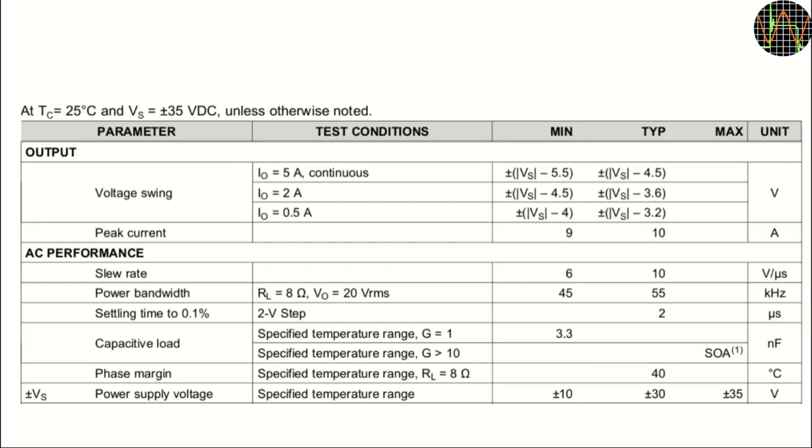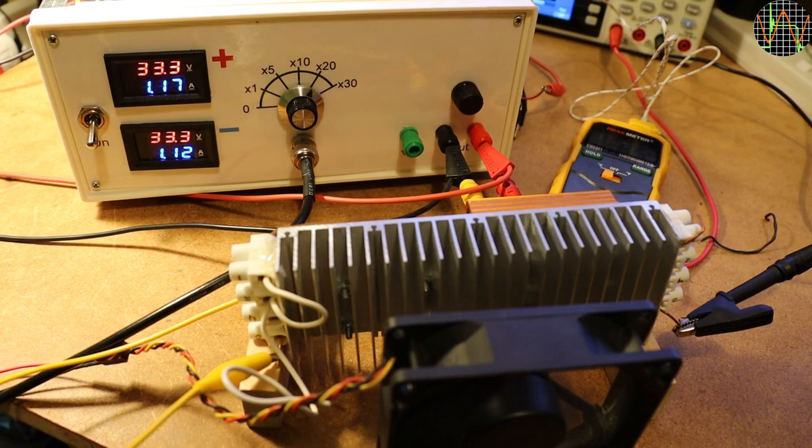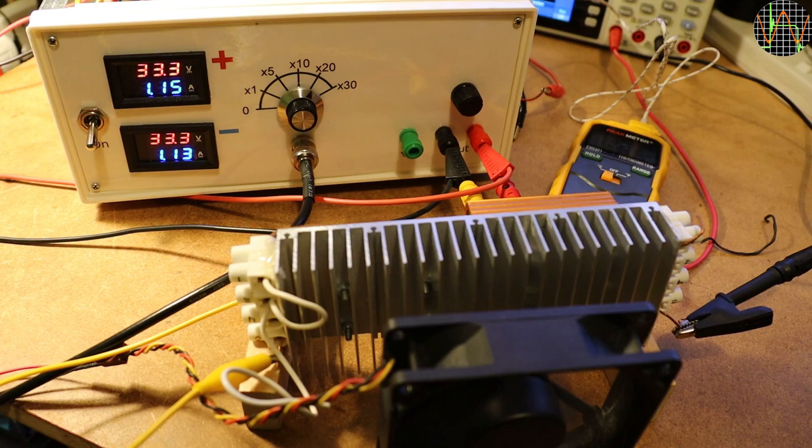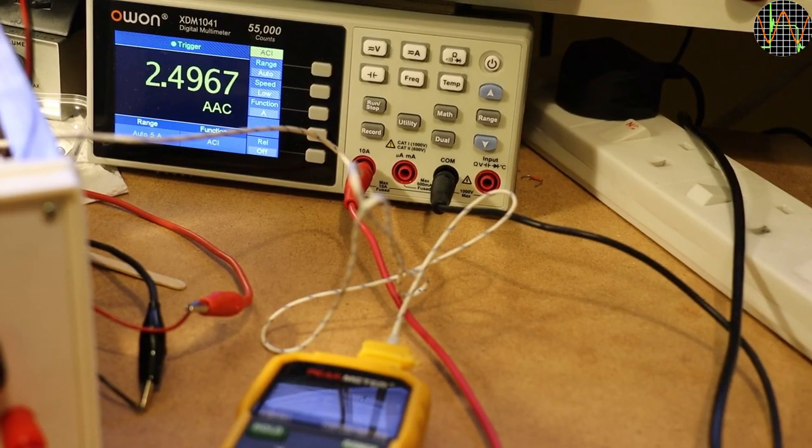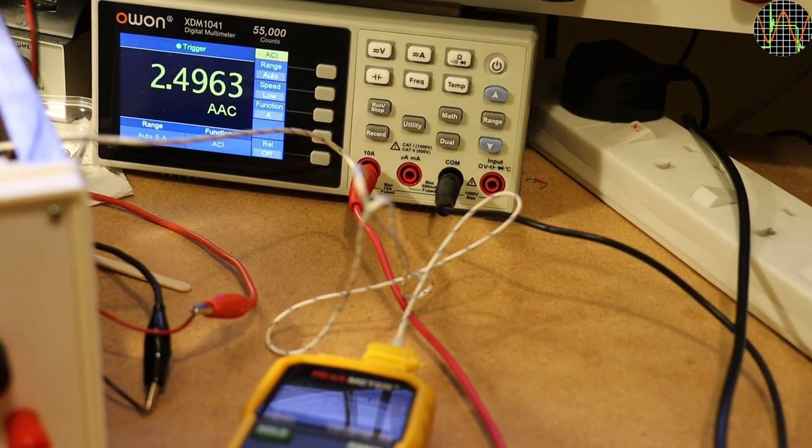One parameter that interested me was the bandwidth. The datasheet of the OPA541 lists the power bandwidth at a load resistance of 8 Ohms and 20V RMS as between 45-55kHz. 20V at 8 Ohms means 2.5A or 50W output power. That sounded like a good test to try to replicate. The 8 Ohm load is one of my power resistors on that heatsink in the front. It gets very hot, so I rigged an additional fan to blow over the heatsink. The output current of about 2.5A is shown by the O1 meter. It is just for control of my initial setup and won't be able to read anything once the frequency gets above 8 kHz or so.